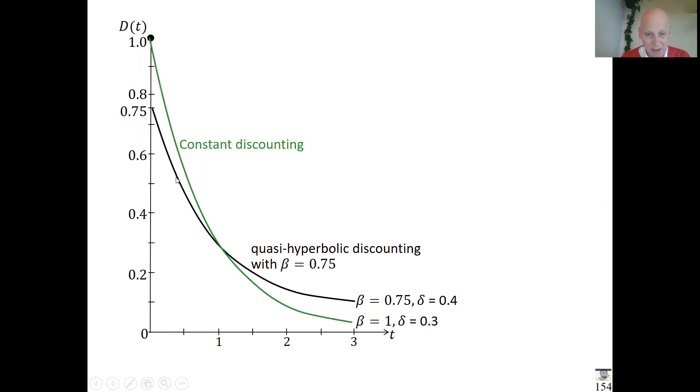After that, it is constant discounting for everything after, and it intersects here. Everywhere in the future is constant discounting; only when the present is involved is there much more discounting than everywhere else, much more impatience than everywhere else. Therefore, you have decreasing impatience, but only from the present to the future. Ever in the future, the impatience is constant—very simple, tractable, capturing the main thing.